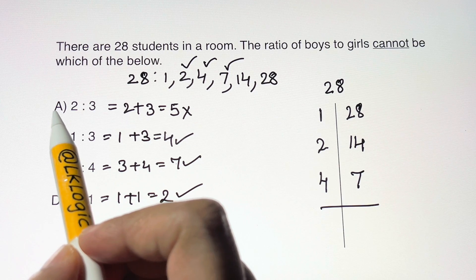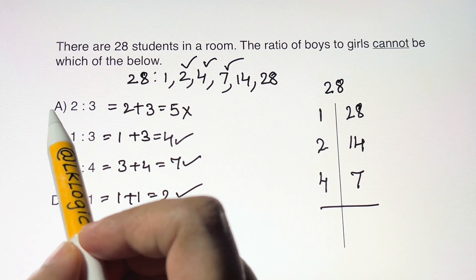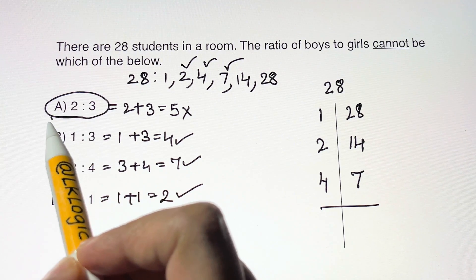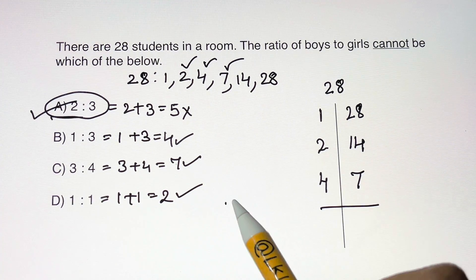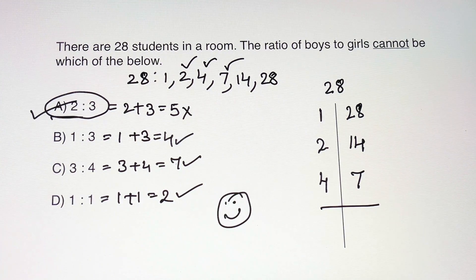And this 2 is to 3 cannot be the ratio of boys to girls, thus making 2 is to 3 the correct answer. Thank you so much for watching. Bye bye, take care.